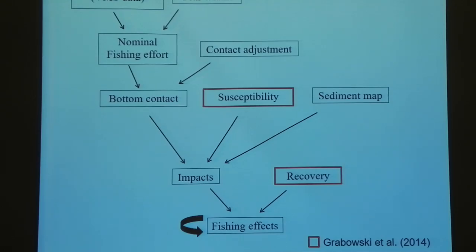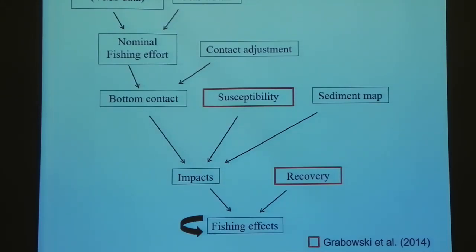One problem we have is we don't actually know the distribution of these benthic habitat features, so what we use is sediment as a proxy for where these features are located. Combined, this becomes impacts to the habitat. We also consider recovery as well — once a disturbance stops, things start to recover. I highlight these in red because the parameters involved with these two components were part of a very large comprehensive review on impacts and recovery conducted by Hrabowski et al. for the SASE model mentioned earlier.